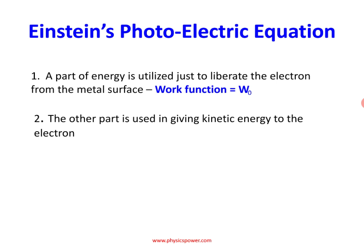Some part of the energy the electron uses just to come out from the metal surface, and the remaining energy becomes kinetic energy. That maximum kinetic energy we write as ½mv². So the photon energy hμ is distributed in two ways for the electron, and we write the equation as: hμ = W₀ + ½mv².